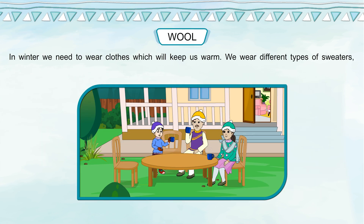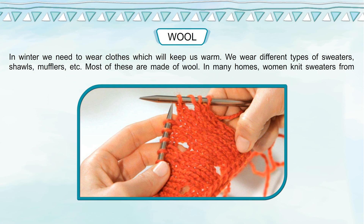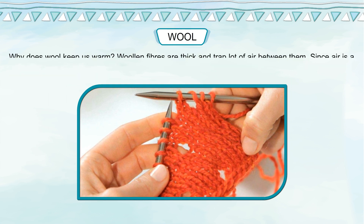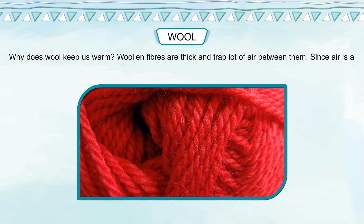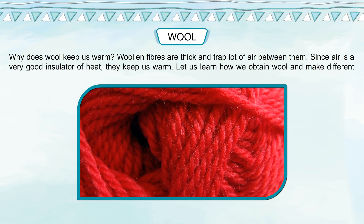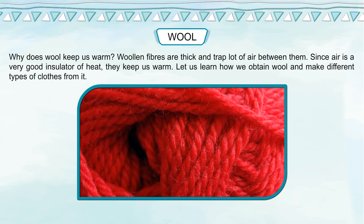In winter, we need to wear clothes that keep us warm — sweaters, shawls, mufflers and so on — most of which are made of wool. Wool fibers are thick and trap a lot of air between them. Since air is a very good insulator of heat, wool keeps us warm. Let us learn how we obtain wool and make different types of clothes from it.